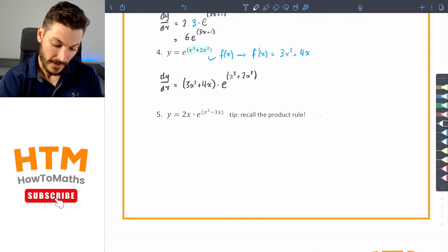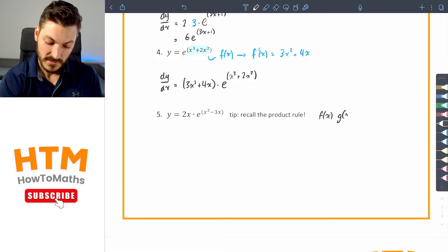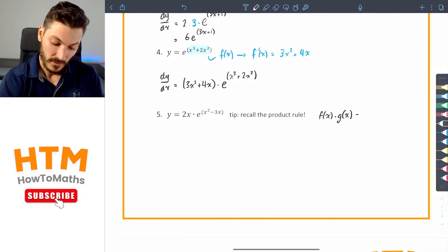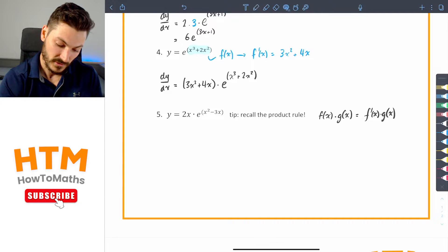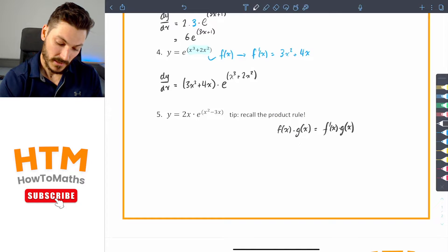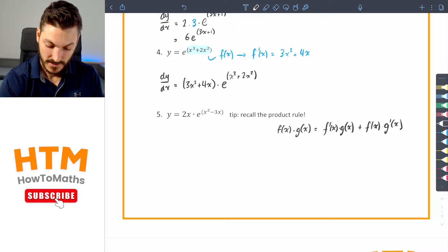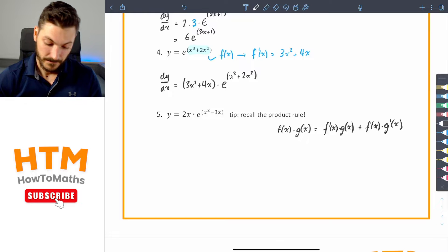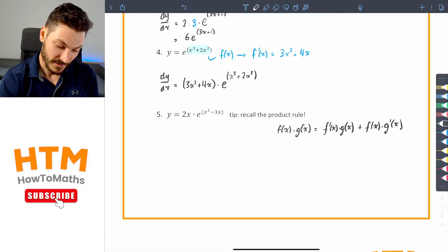The product rule says if I have some function of x times another function of x, we'll call it g of x, and we want to find the derivatives, it's going to be f dash x times g of x. I'm going to run out of room. So I'll just drag this down a bit. Plus f of x times g dash x. So essentially we're taking turns with which one's going to be the derivative and timesing them together. So I don't usually use that notation so I had to recall that.